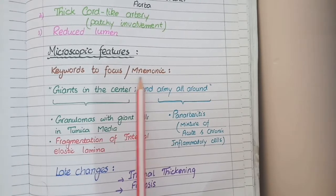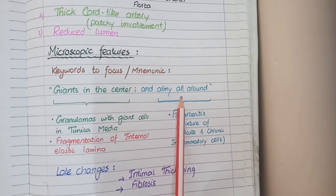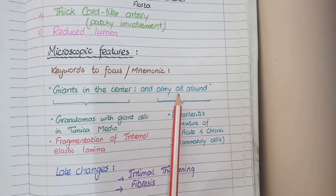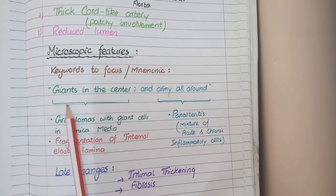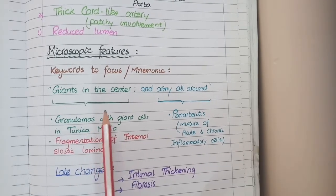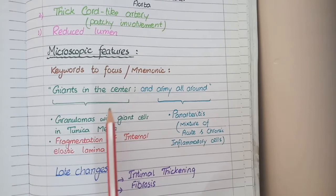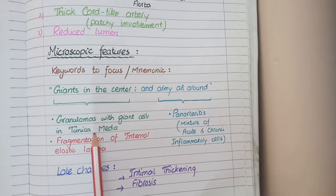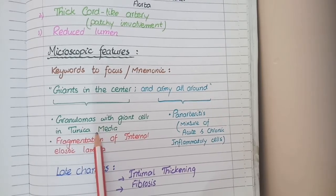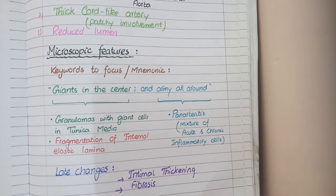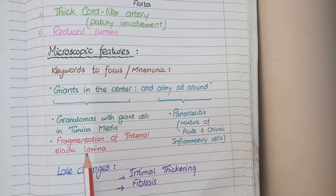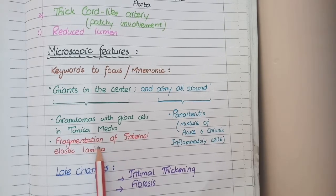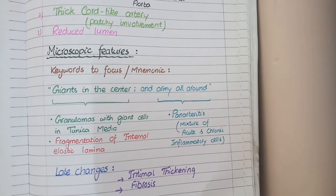For the microscopic features of giant cell arteritis, the mnemonic to remember is 'giants in the center and army all around.' The first phrase, 'giants in the center,' means granulomatous inflammation with giant cells occurring in the central layer of the vessel wall — the tunica media. As granulomatous inflammation increases, it causes breakdown of the internal elastic lamina, the barrier between tunica intima and tunica media, resulting in fragmentation of the internal elastic lamina.